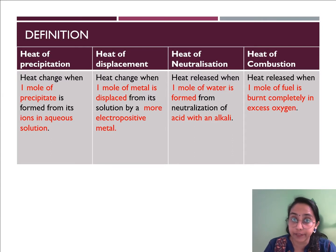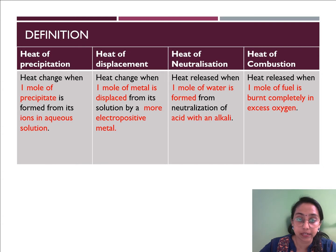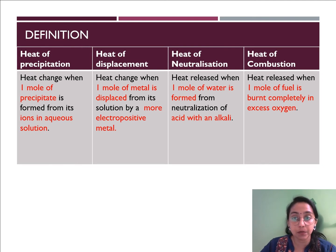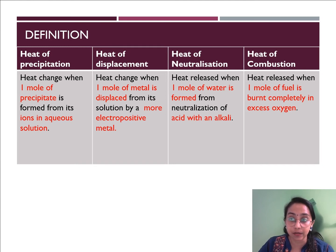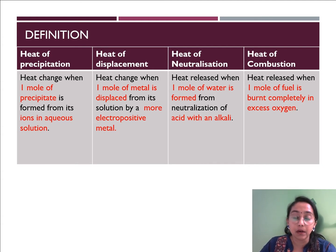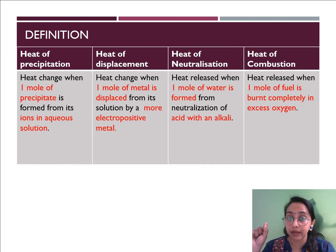Now we're going to look at the first part on definitions. Heat of precipitation: the heat change when one mole of precipitate is formed from its ions in aqueous solution. Heat of displacement: heat change when one mole of metal is displaced from its solution by a more electropositive metal. Heat of neutralization: heat released when one mole of water is formed from neutralization of acid with alkaline. Heat of combustion: heat released when one mole of fuel is burned completely in excess oxygen. The red bolded words are key words — compulsory in your definition — and you must adapt the bolded words according to the question.